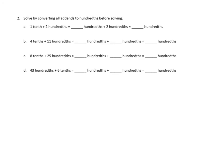Problem number two. Solve by converting all addends to hundredths before solving. Let's take a look at 2C. We've got eight tenths plus twenty-five hundredths, and we need to convert them all to hundredths first.